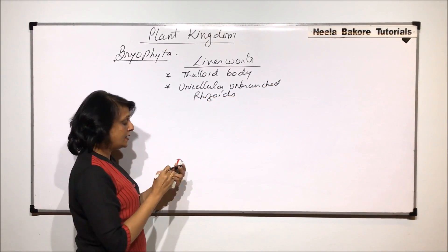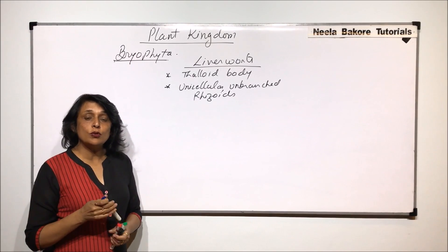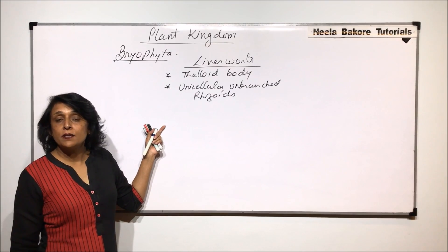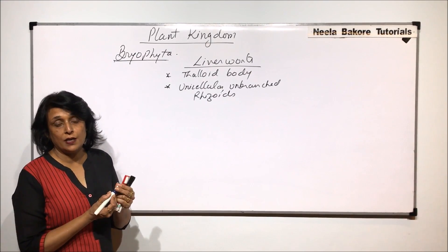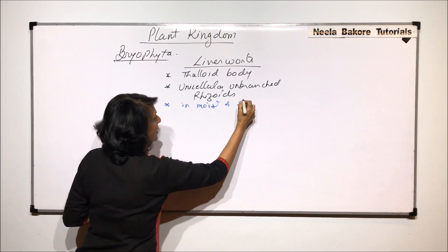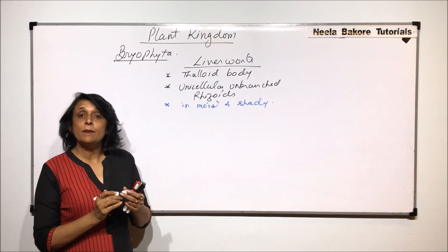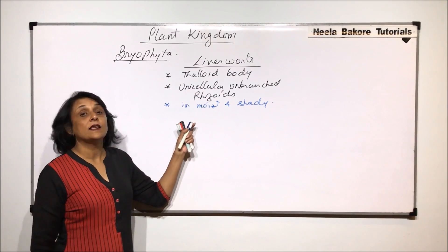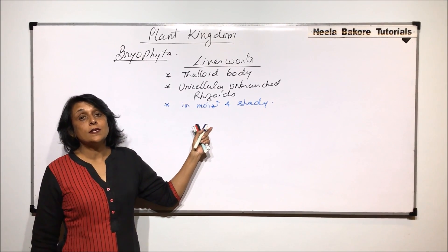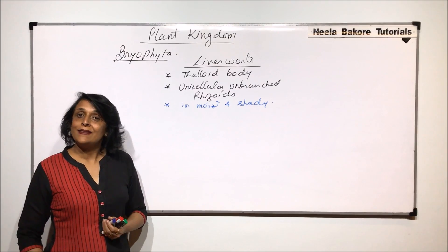They do have unicellular unbranched rhizoids, and these rhizoids help in absorption — that means they function like roots. But they are not true roots, as vascular tissue (xylem and phloem) is absent. As typical bryophytes, moisture is required, so they grow in moist and shady places. Bryophytes are known as the amphibians of plant kingdom because the male gametes (sperms) require water to swim to the female gamete for fertilization.